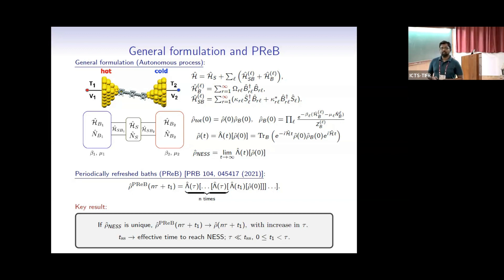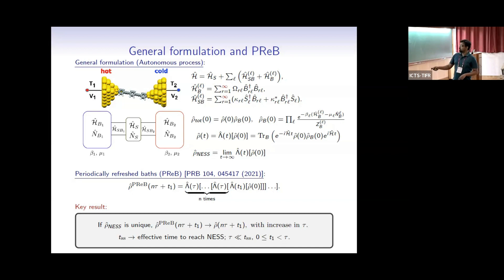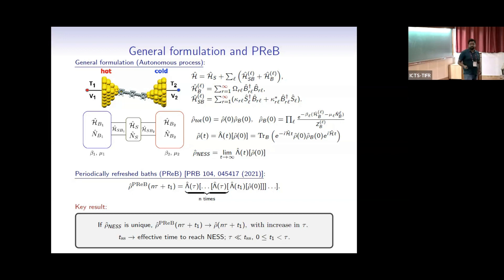The fact that you refresh the baths as a separable state puts some constraint on the time τ you have to evolve. This is a periodically refreshed baths dynamics — a different dynamics from the original. But if you want to model the original dynamics via this, we were able to prove that if the steady state is unique, then as you increase τ, the state obtained from the refreshed-baths dynamics and the state you would have obtained in the original dynamics at time nτ + τ₁ approach each other.